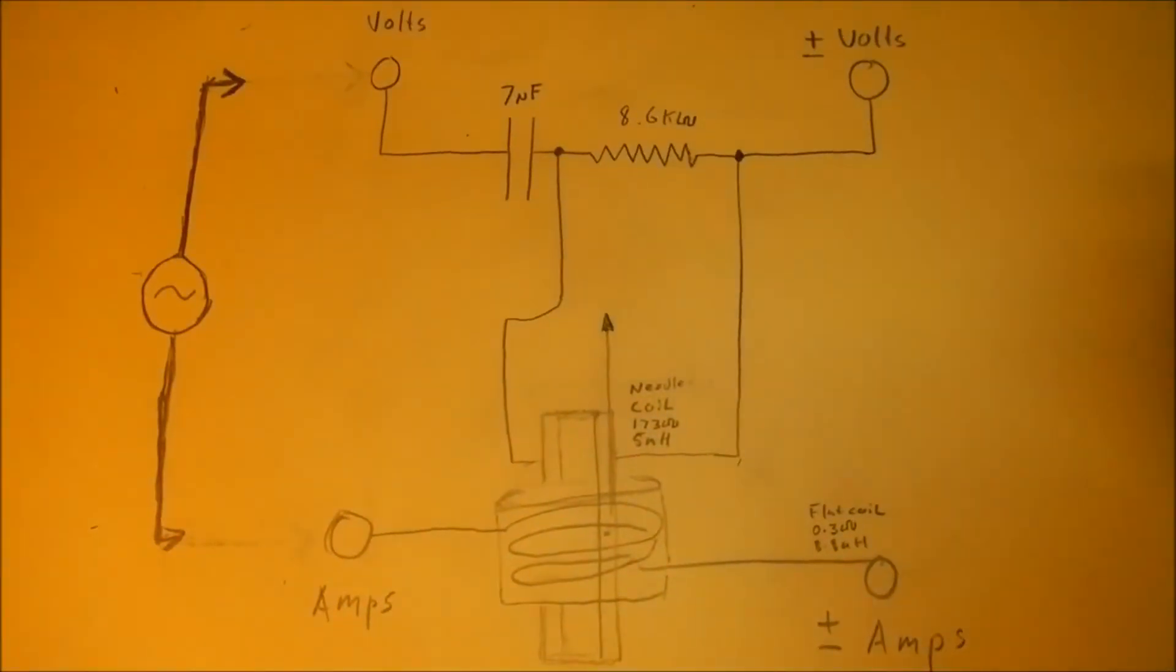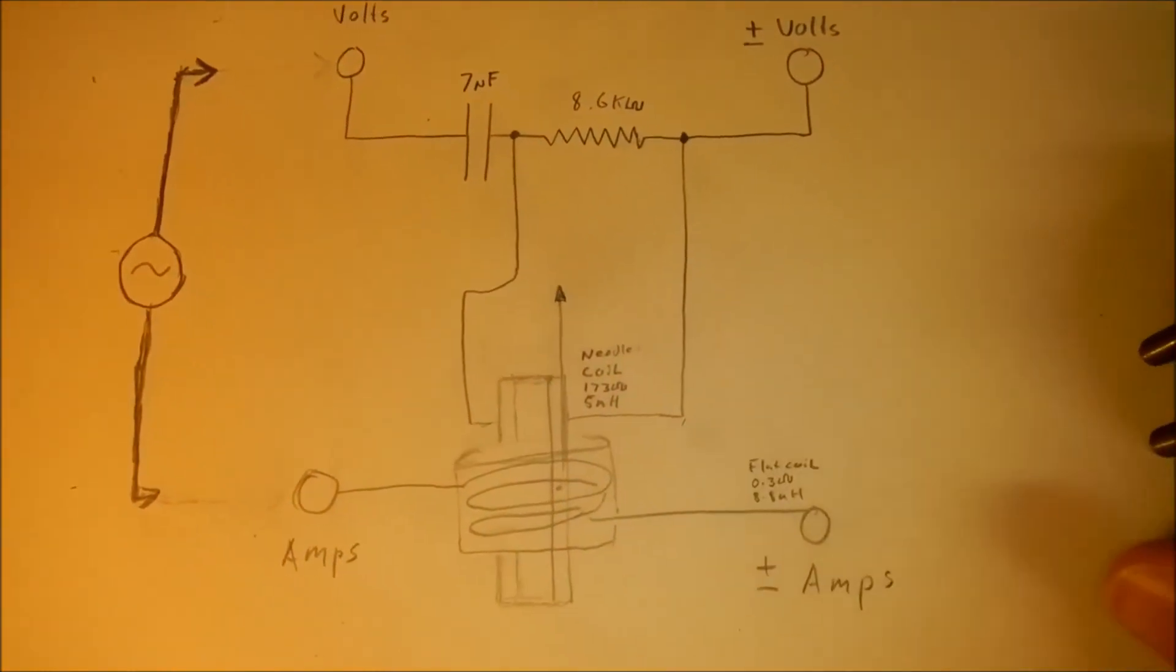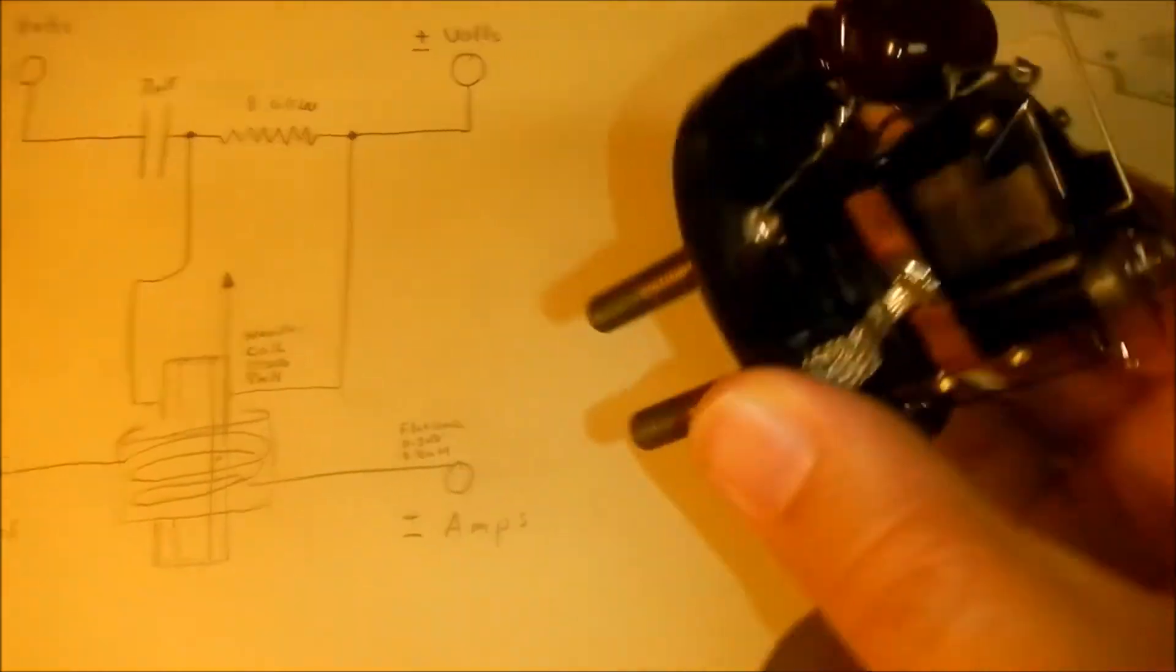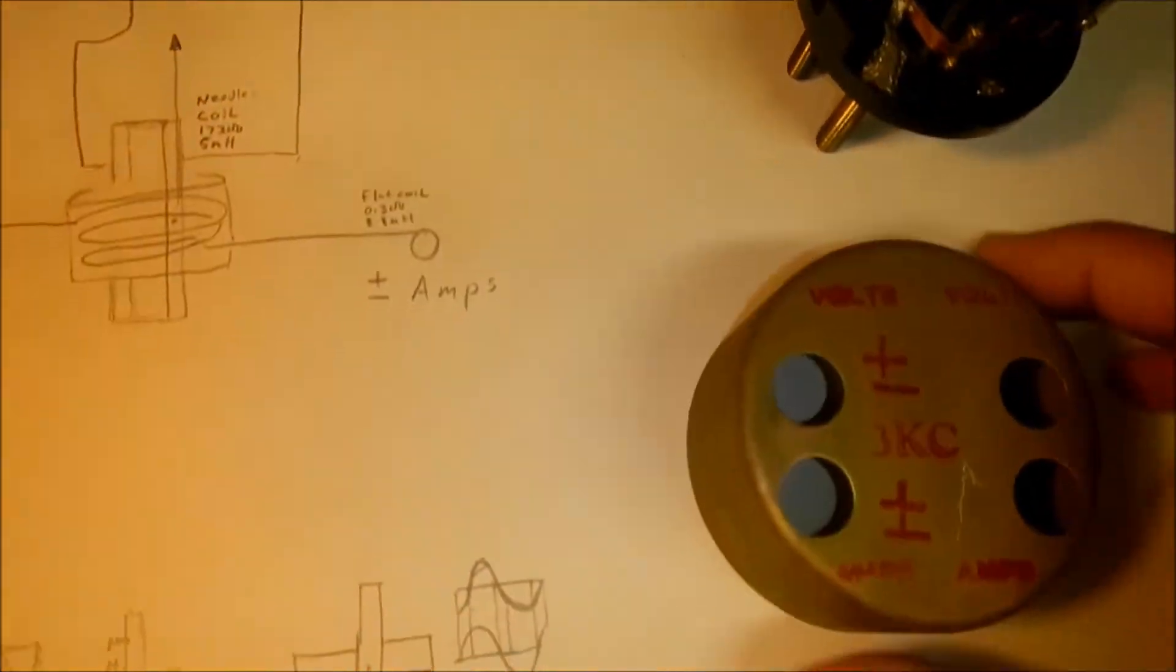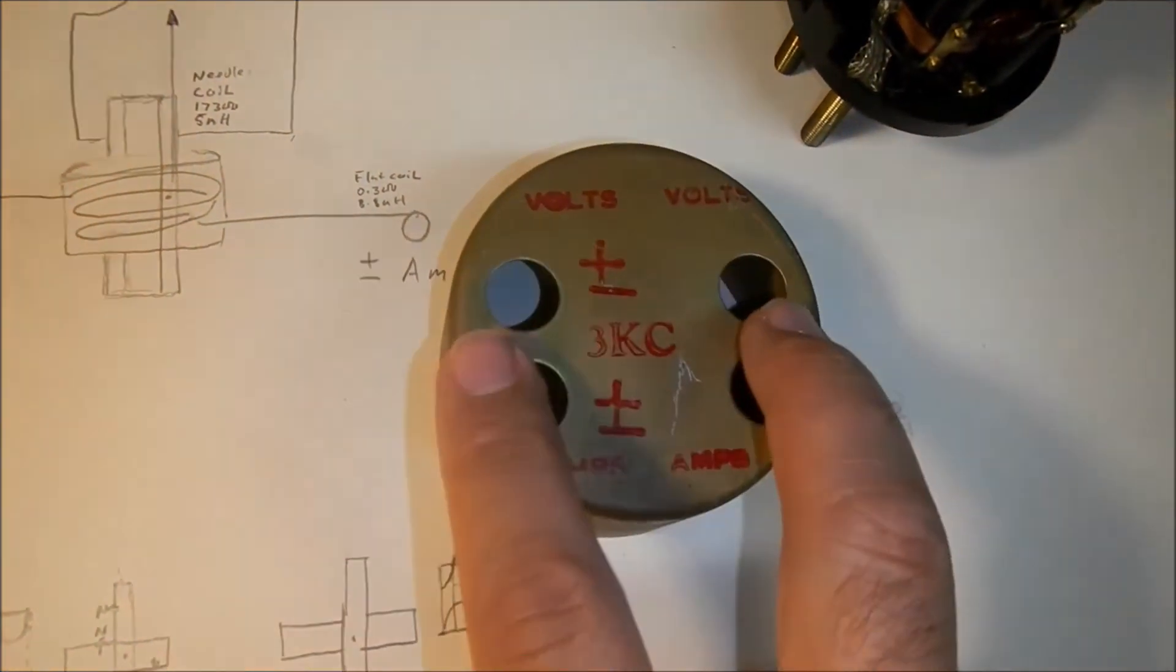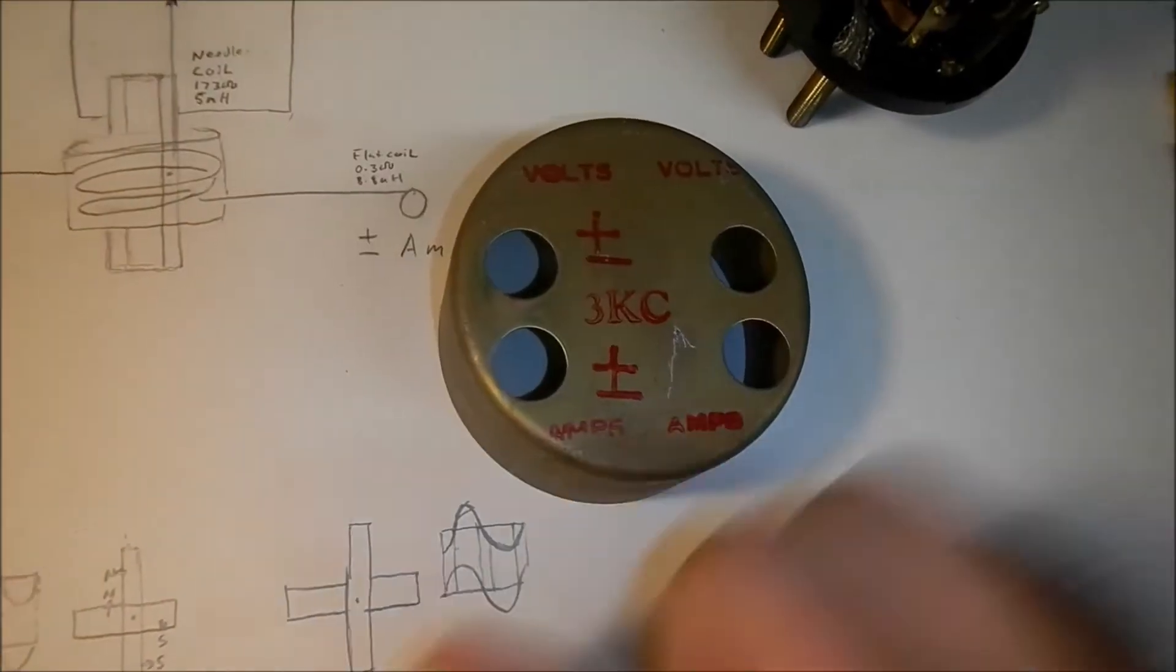So this is the schematic overview of the power factor meter. And see it has four terminals here. And this is the cover for it. You have two terminals to measure the voltage across the load and two terminals to measure the current through the load.